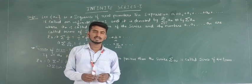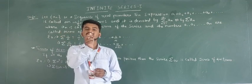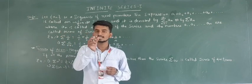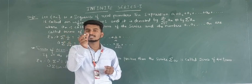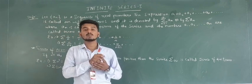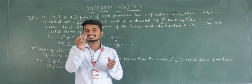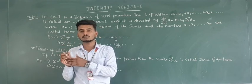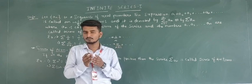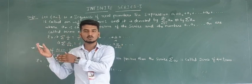So what do we mean by infinite series? First we will see about the series. A series is nothing but the sum of the terms of a sequence. So what do we mean by a sequence? A sequence is an orderly arrangement of numbers. For example, take the sequence 1, 2, 3, 4, 5, 6, and so on.